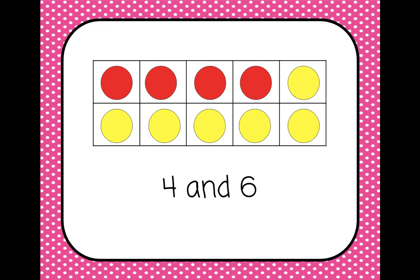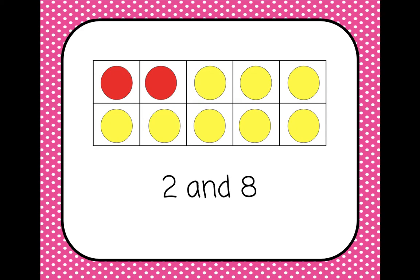Now we have four red and six yellow. Last time we had six red and four yellow, and we knew that six and four were friendly numbers, so four and six also have to be friendly numbers. Now we have three red and seven yellow, so three and seven are friendly numbers. We have two red and eight yellow, so two and eight are friendly numbers.